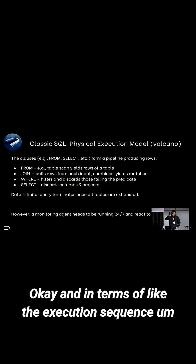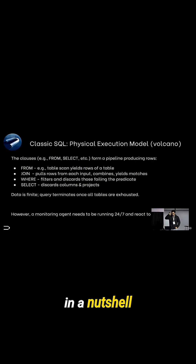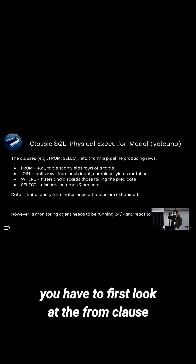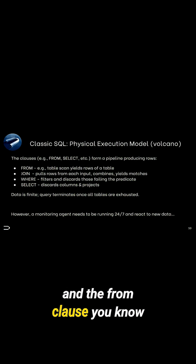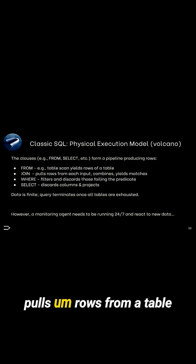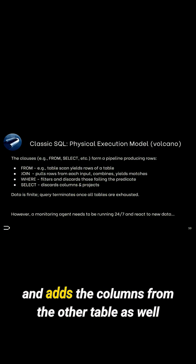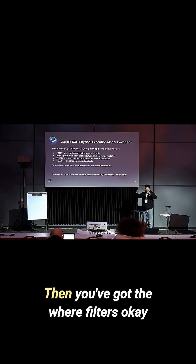In terms of the execution sequence, in a nutshell, the way you think about a query: you have to first look at the FROM clause, and the FROM clause pulls rows from a table. The JOIN takes rows from the other table and adds the columns from the other table as well. Then you've got the WHERE clause which filters.